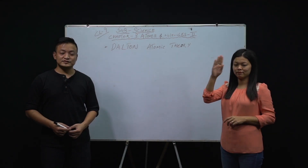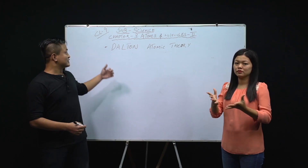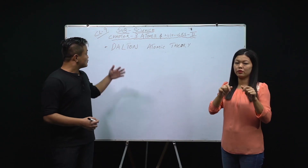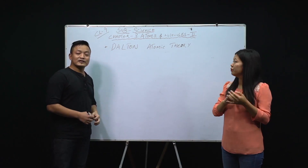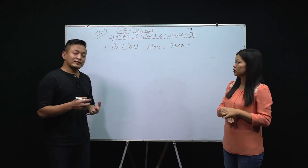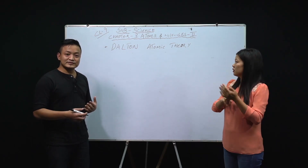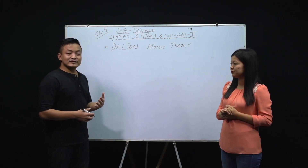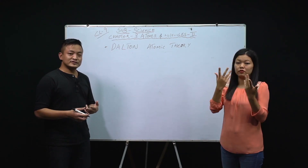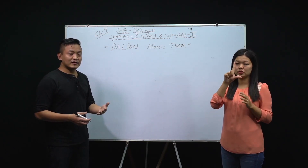Hello, my dear Class 9 students, welcome back. Let's get started with our second part of Chapter 3: Atoms and Molecules. Today we'll discuss Dalton's Atomic Theory. Yesterday we studied about atoms, compounds, elements, and the laws of chemical combination — the law of conservation of mass and the law of definite proportion.